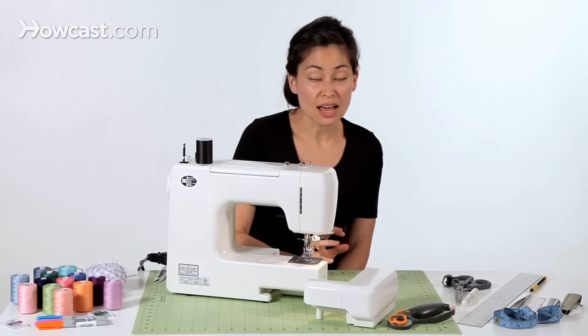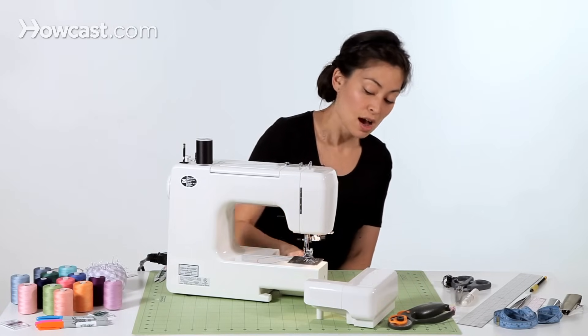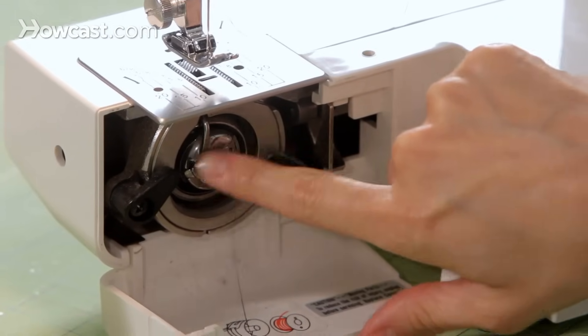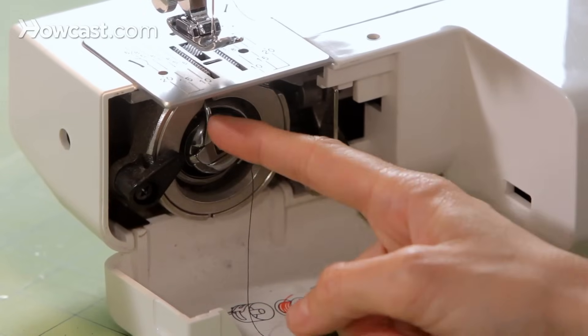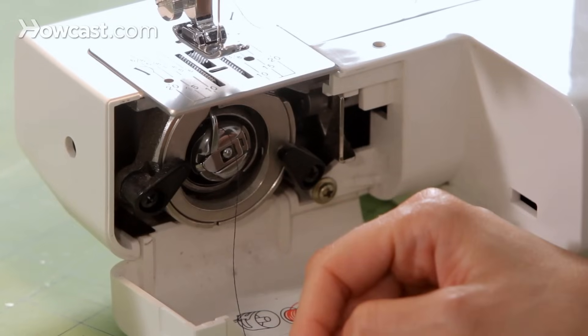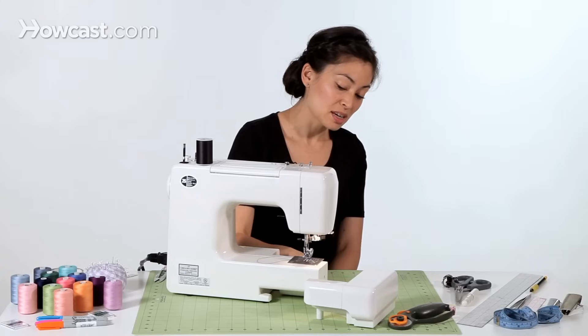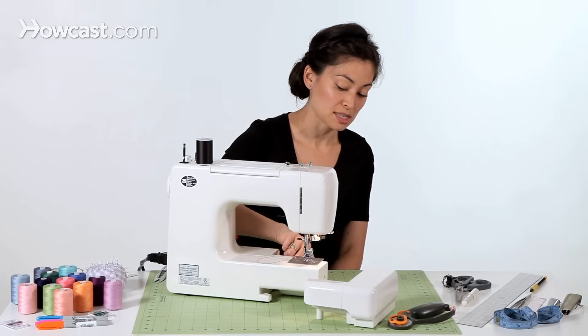If you do this and you're still having problems, it may be for a couple of reasons. One, your bobbin casing, if you notice right now, it's locked in place. It's not falling out. Our notch here is in this groove where it holds it all together. If your bobbin casing isn't all the way in, that could be a problem you're experiencing.